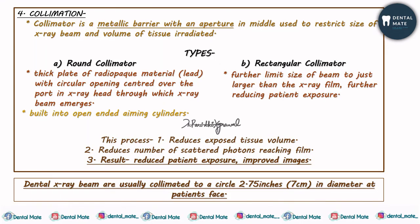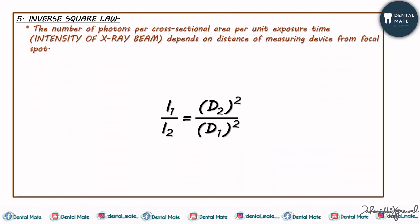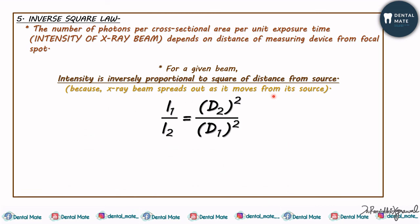The last factor controlling the x-ray beam is the inverse square law. The intensity of the x-ray beam depends on the distance of the measuring device from the focal spot. For a given beam, the intensity is inversely proportional to the square of the distance from the source — intensity I₁ is inversely proportional to distance D₁ squared — because the x-ray beam spreads out as it moves from its source. If the distance between the x-ray tube and the patient is changed, for example switching from a machine with a short aiming tube to a long aiming tube, there is a marked effect on the skin exposure.